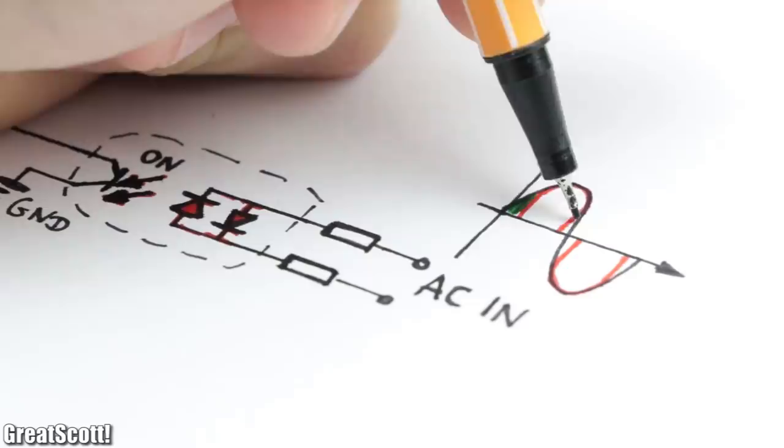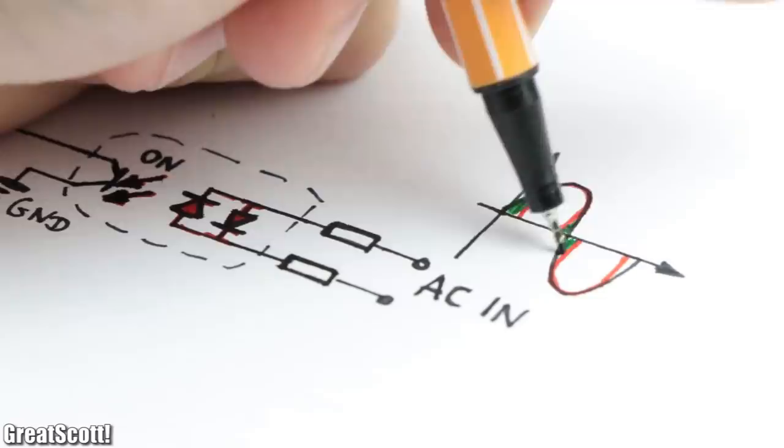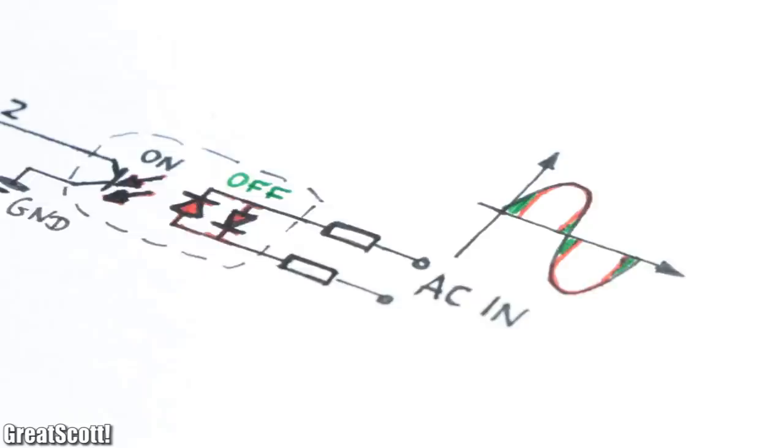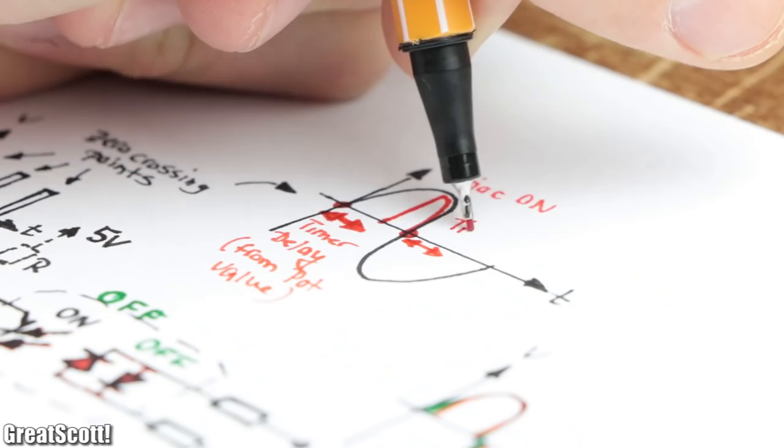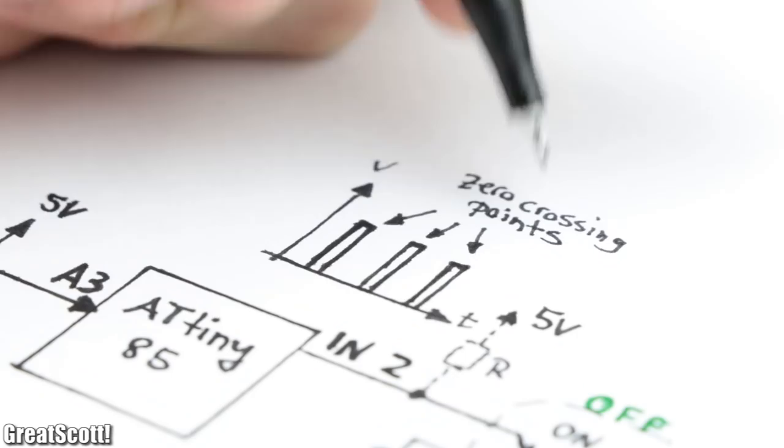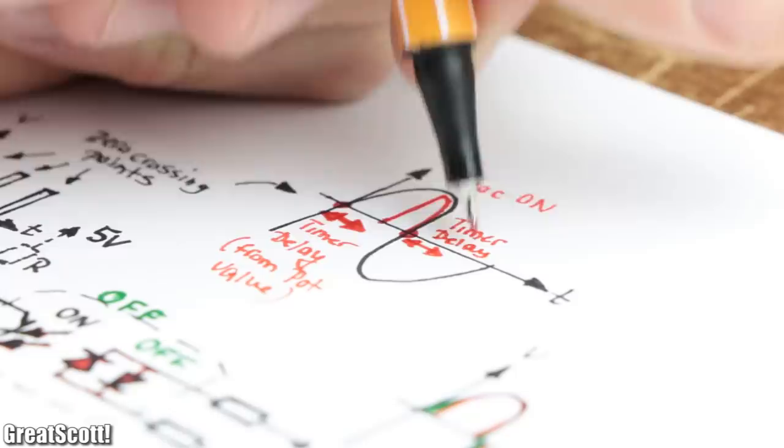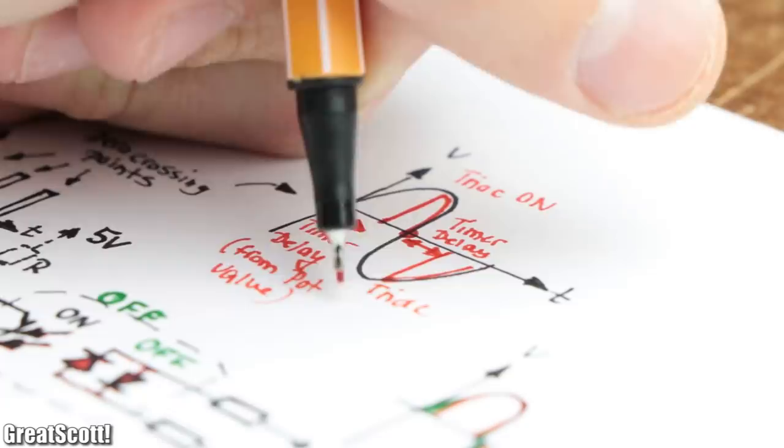But as soon as the mains voltage reaches its zero crossing point the voltage is too low to power the LEDs. The transistor turns off and thus the microcontroller input connects to 5V through its internal pull-up resistor. This way we have a zero crossing point indicator. From whose occurrence we can use a timer to delay the ignition of the triac according to the set potentiometer value and thus get our desired phase angle.